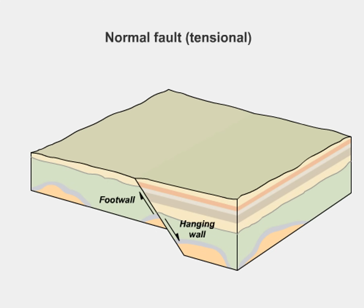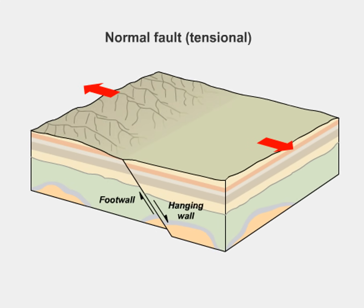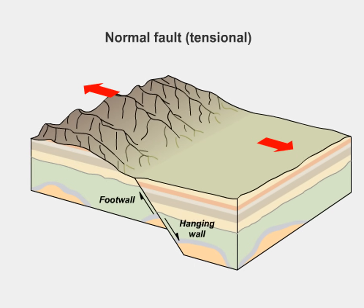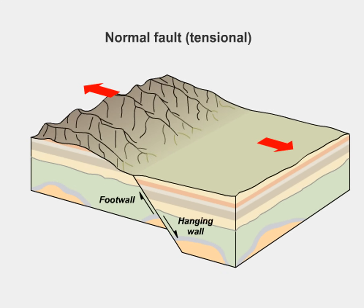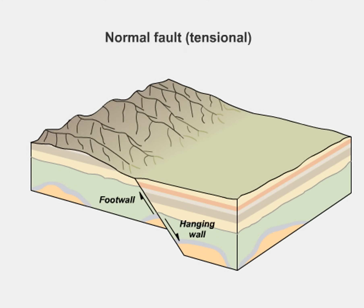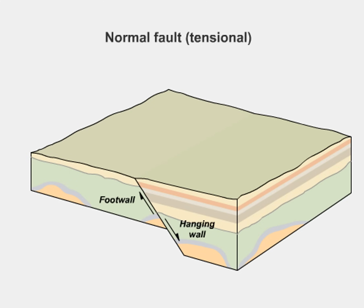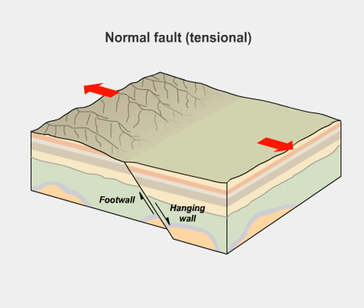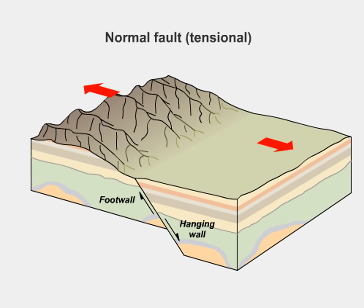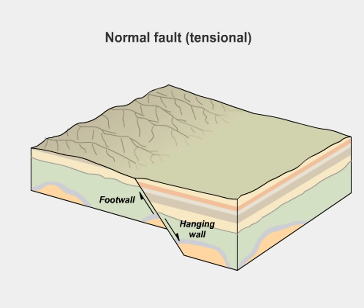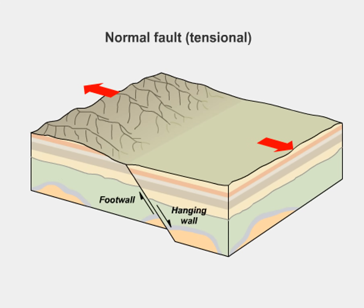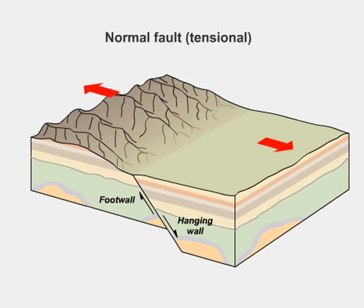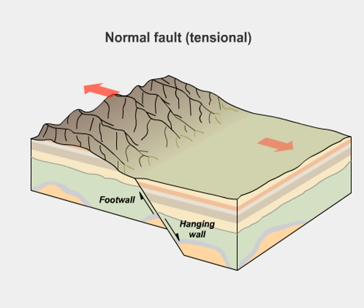Movement along a normal fault is predominantly vertical, although the orientation of the fault plane may not be perpendicular to the surface. In the animation, click play to begin. As the landscape is extended, notice that one side of the fault plane drops down relative to the other. The fault scarp formed along the uplifted mountain front eventually erodes away, leaving little surface evidence of the fault.